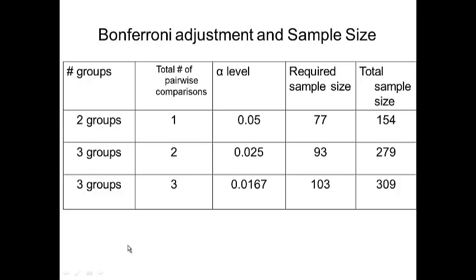Instead, if you also want to compare drug one versus drug two, then you are conducting three pairwise comparisons. You divide the alpha level by three and plug that number into PS. PS will tell you that you need 103 samples per arm; you multiply that by three to get the total sample size for your study.